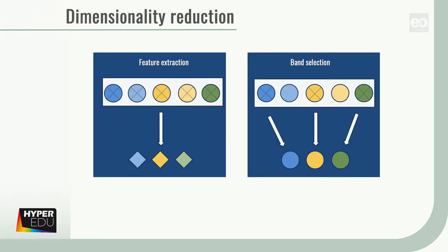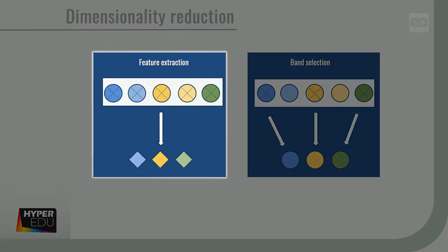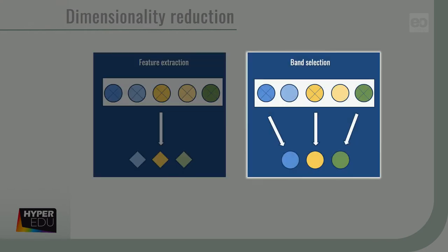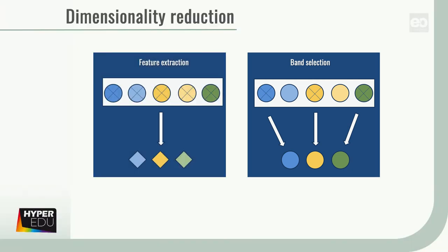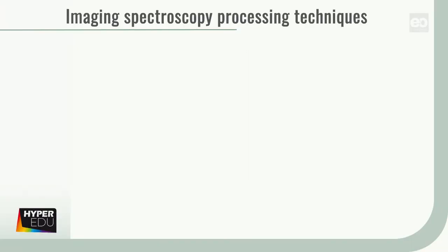Dimensionality reduction is typically done by feature extraction, which transforms the spectra to a lower dimensional representation, or band selection that selects only a subset of most significant bands. Only now is your data ready for the actual analysis, and that is a wide field.